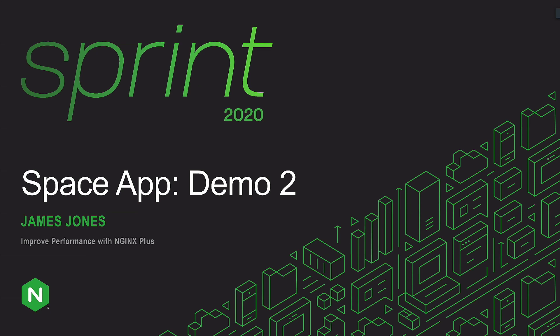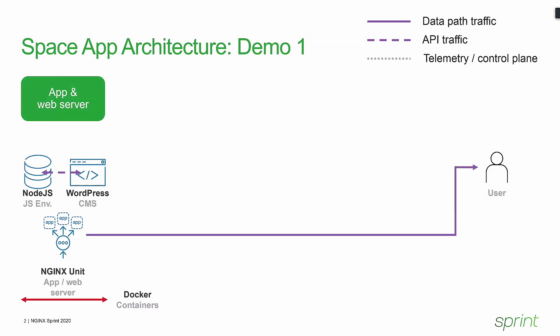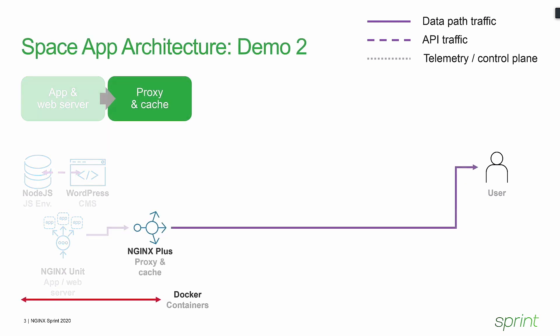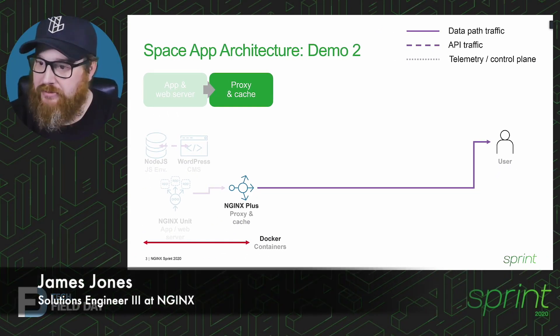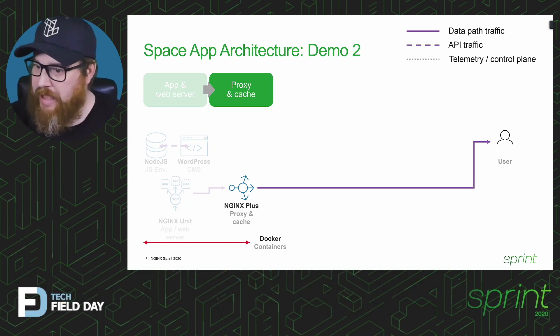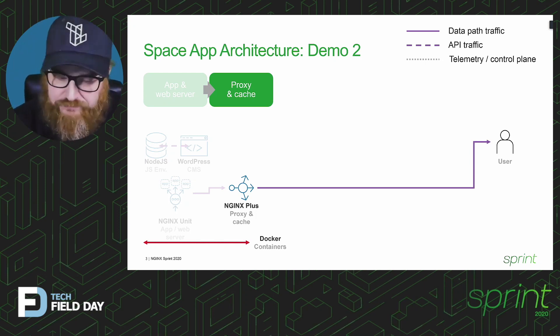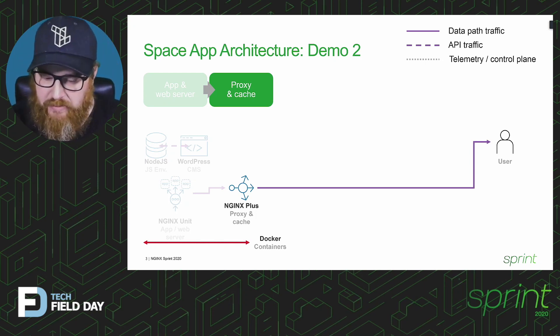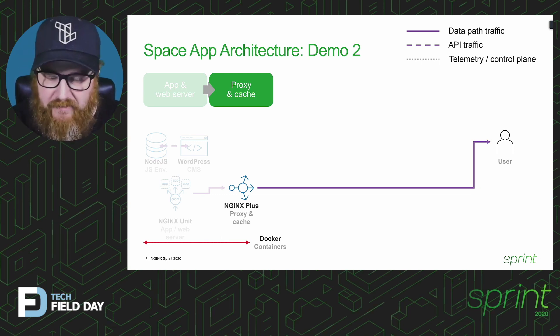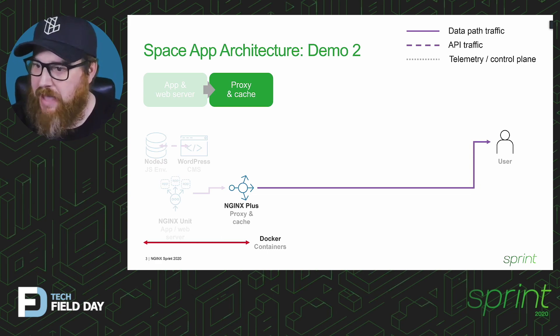I'm James Jones, a Solutions Architect for the Nginx BU at F5 Networks. We're going to continue iterating on what Libby and Timo have shown you. We've got WordPress and Node.js inside the Nginx Unit server. In this demo, we're going to put Nginx Plus in, acting as a load balancer with some micro caching to help take some of the load off that Unit server. We're also going to add the ability for Prometheus to scrape metrics off of it, so you can get better visibility into what's happening inside the environment.